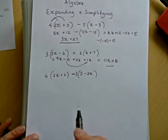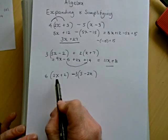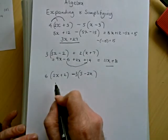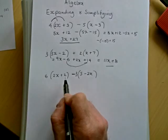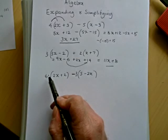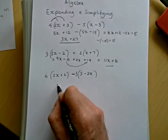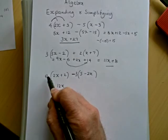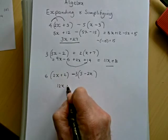OK, another one now. So 6 lots of 2x. What I might suggest to you is that you maybe pause the video and try some of these yourself and then check with my answers. So 6 lots of 2x is 12x, and 6 lots of 2 is 12.